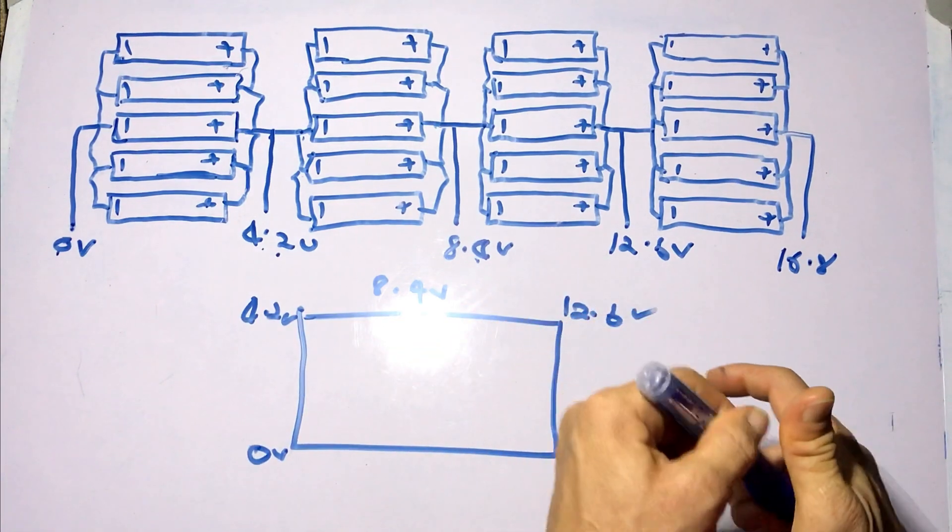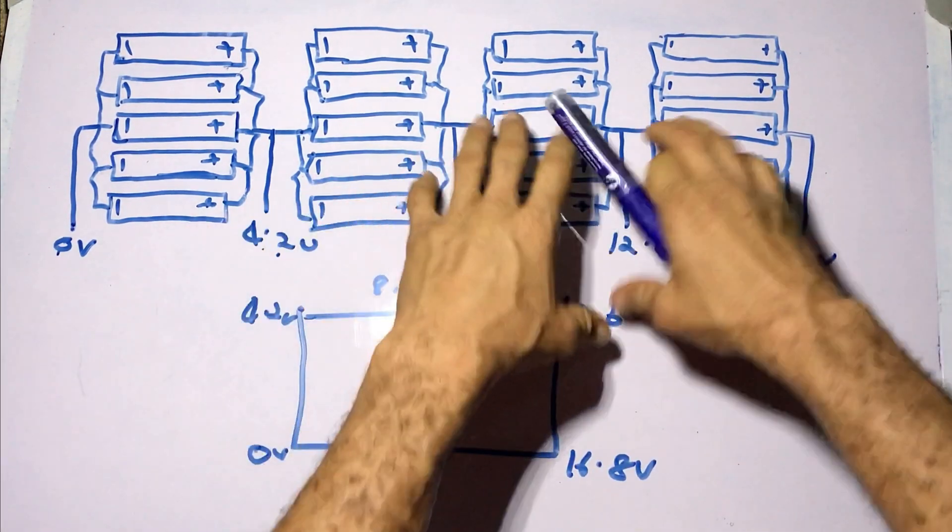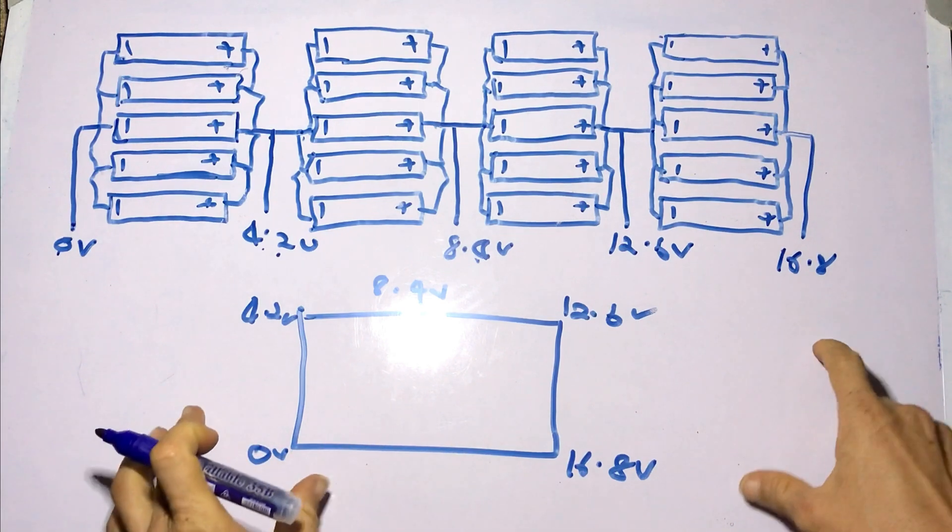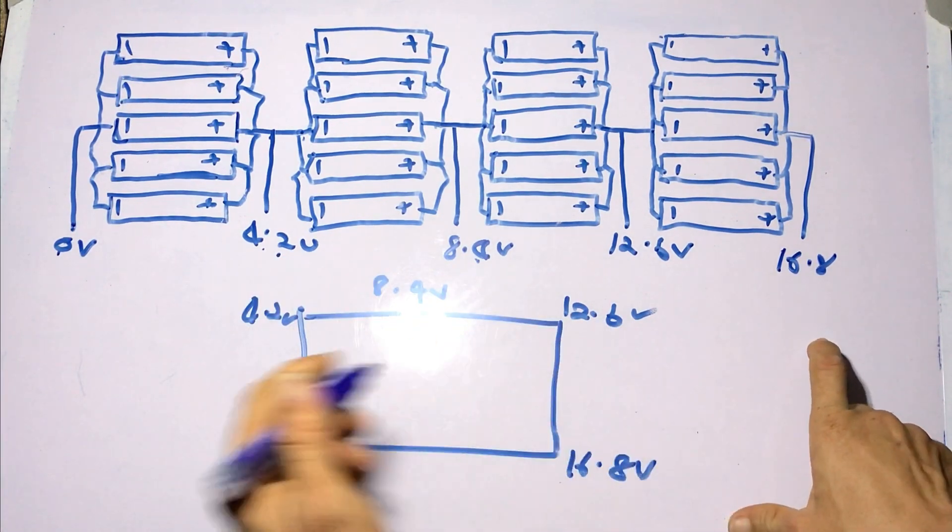Then we can wire it to our BMS. Now that we understand how our battery is wired. On some BMSs, you don't see it labeled zero volts, four volts, and so on.